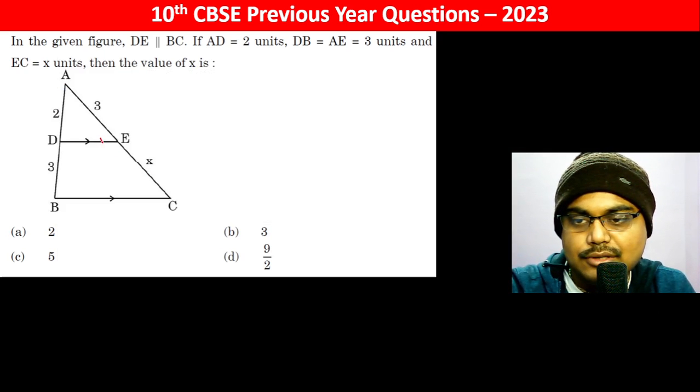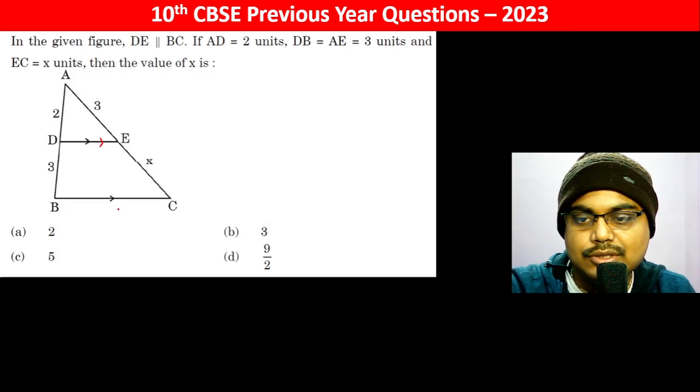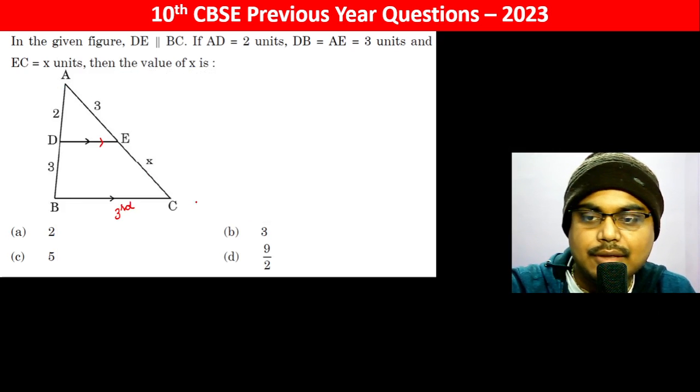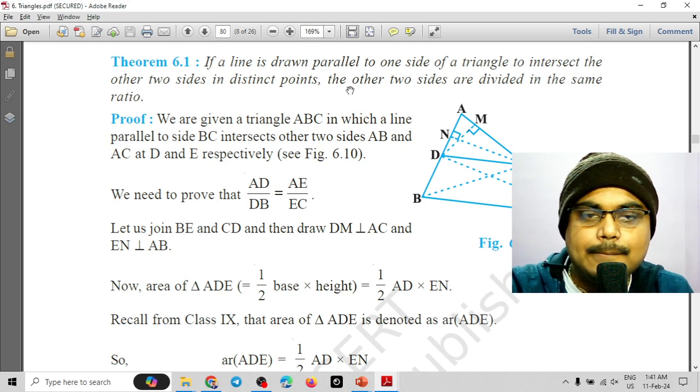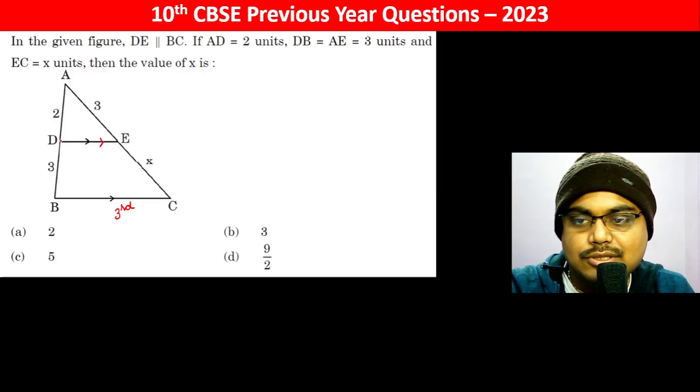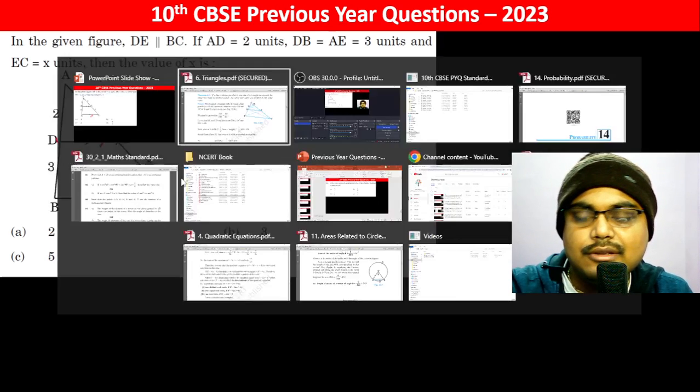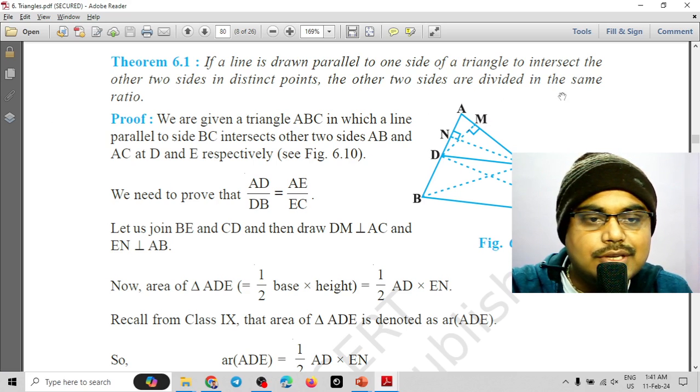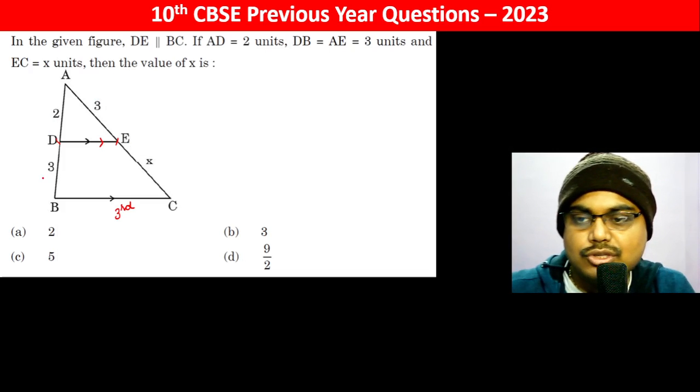If a line is drawn parallel to the third side—this is the third side of triangle ABC—to intersect the other two sides in distinct points, the other two sides are divided in the same ratio. So the ratio is the same.